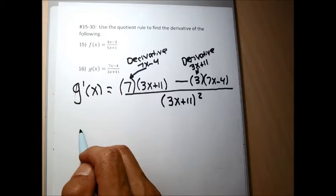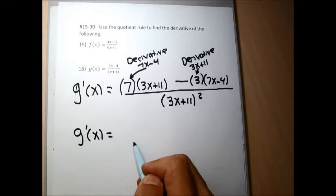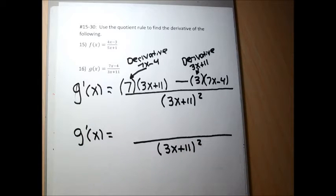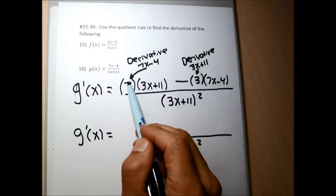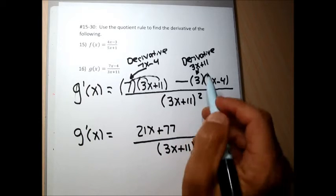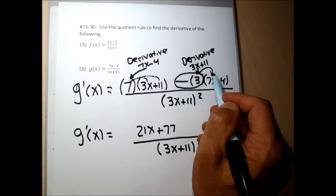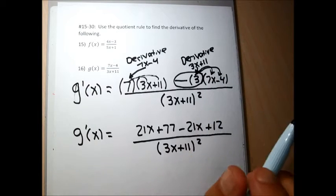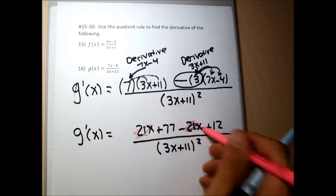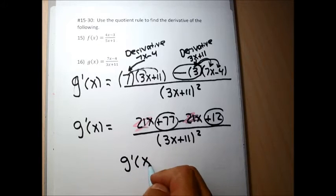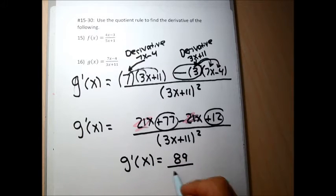When simplifying derivatives of fractions, we generally never multiply out the denominator, so I'll leave (3x plus 11) squared. I multiply out the two halves of the numerator and combine like terms. 7 times 3x gives 21x; 7 times 11 gives positive 77. Then minus 3 times 7x gives minus 21x, and minus 3 times minus 4 gives plus 12. The 21x and negative 21x cancel. Adding 77 and 12 gives 89. So g prime of x equals 89 over (3x plus 11) squared.